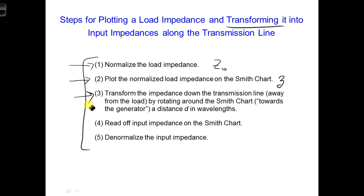Then we will transform it down the transmission line by rotating around the Smith chart, and we're going to rotate it distance d in wavelengths. Then we can read off the input impedance from the Smith chart, and then we will have to denormalize. So we'll have to change our lowercase z to capital Z. So here we transform capital Z to lower z.